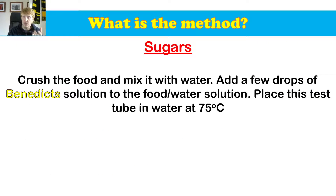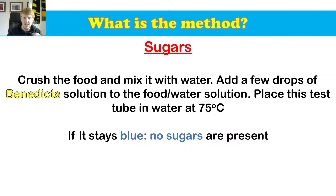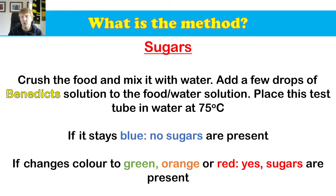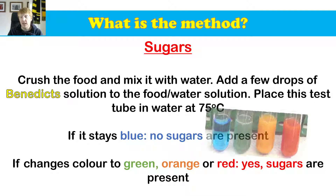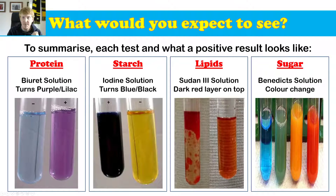And lucky last is sugars. This one has an extra step. Crush the food and mix it with water to get a solution. Add a few drops of Benedict's solution to the food and water, then heat it up in a water bath to 75 degrees — it needs to warm up to see the result. If it stays blue, no sugars are present. If it changes colour to green, orange, or red, then sugars are present in that food.